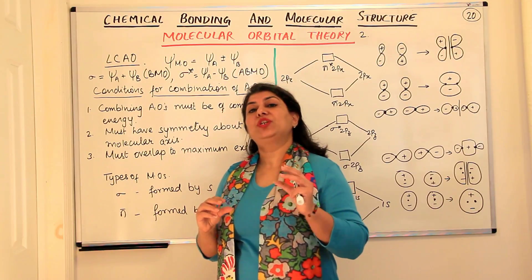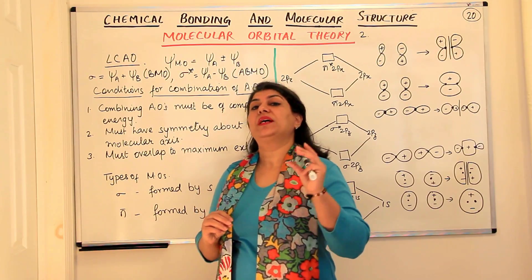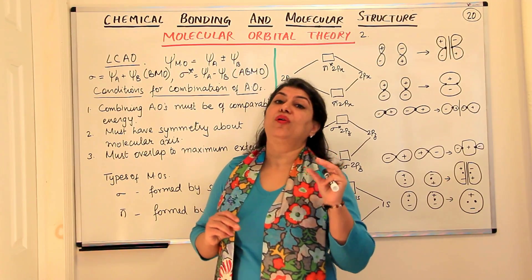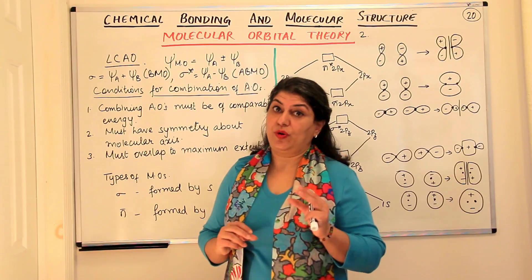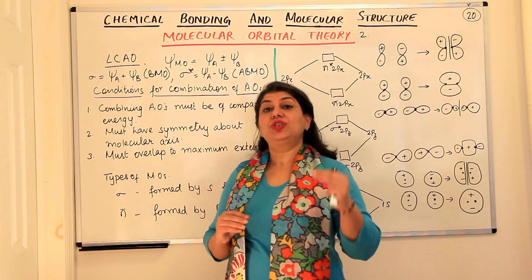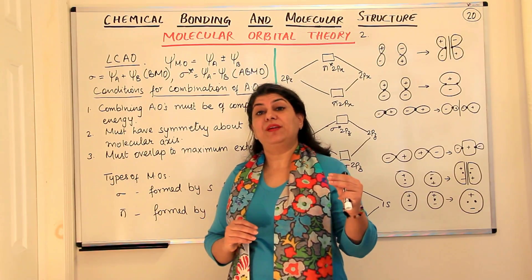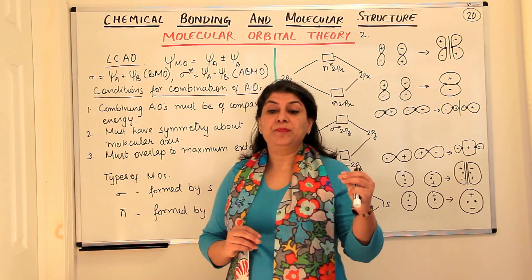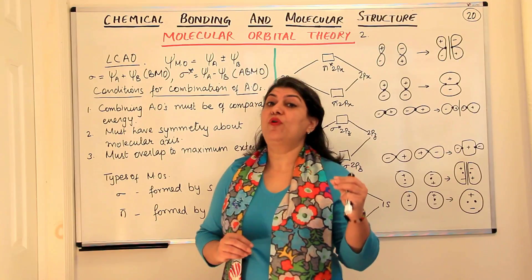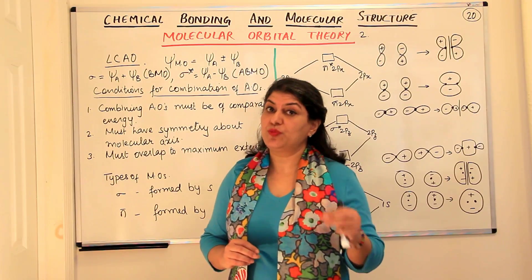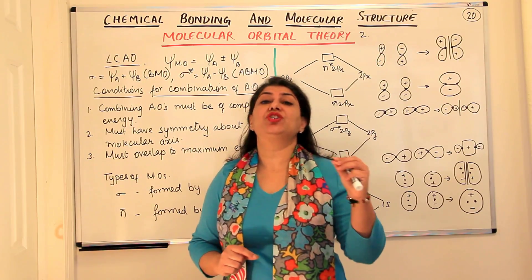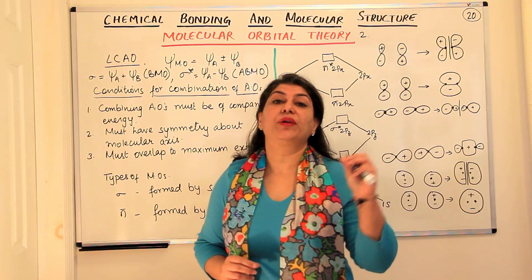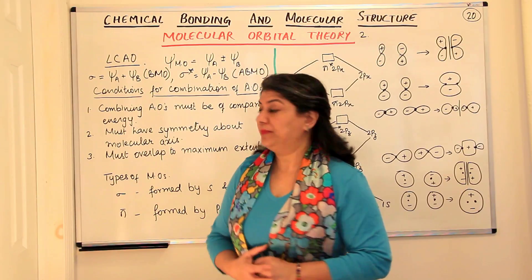Psi is a wave function which tells us about the electron—the probability of finding the electron—and the solution to the Schrödinger wave equation gives us the four quantum numbers which give us the exact address of an electron in an atom.